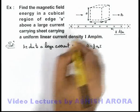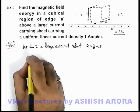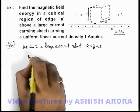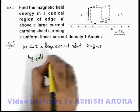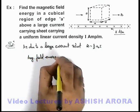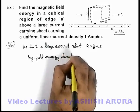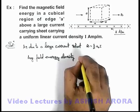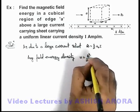In the region where magnetic induction is B, we know that magnetic field energy density is given as u, which is B squared by 2μ₀.